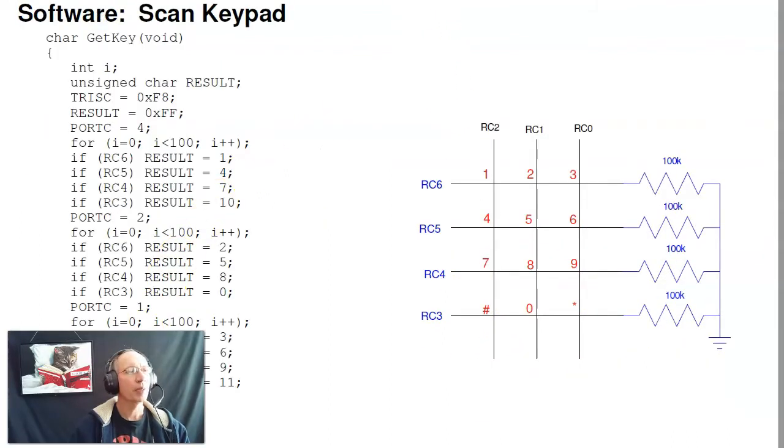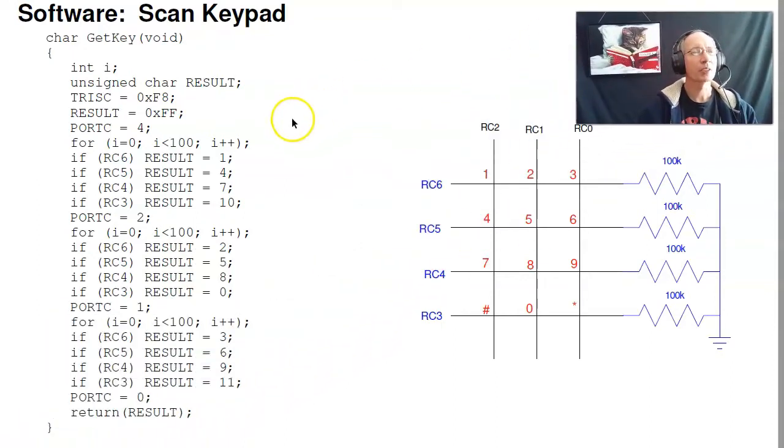A couple of routines to do that. This is kind of a bottom-up programming. What I want to do is at the lowest level, just find out what key is pushed. So what this routine does is it's going to have the default is ff. If no key is pushed, that's what gets returned.